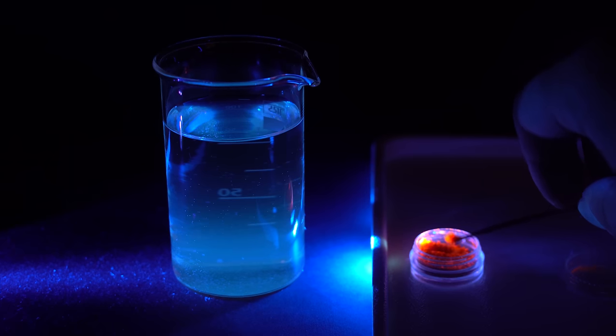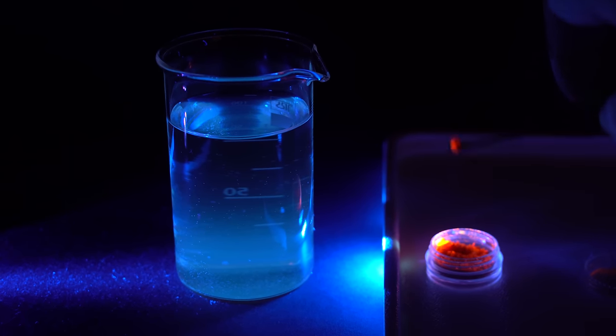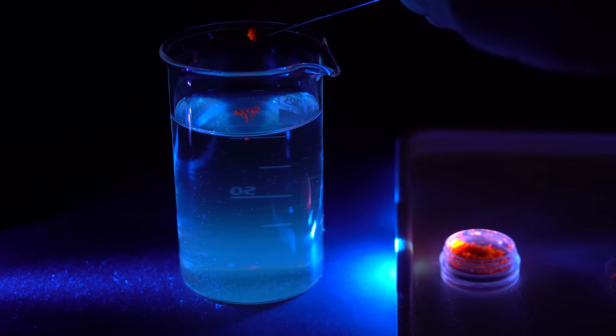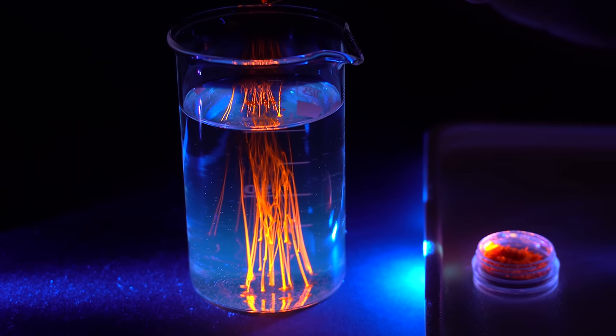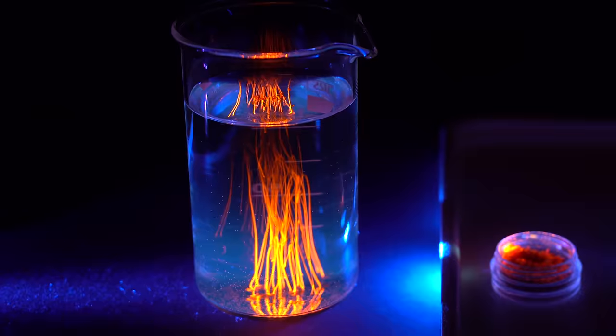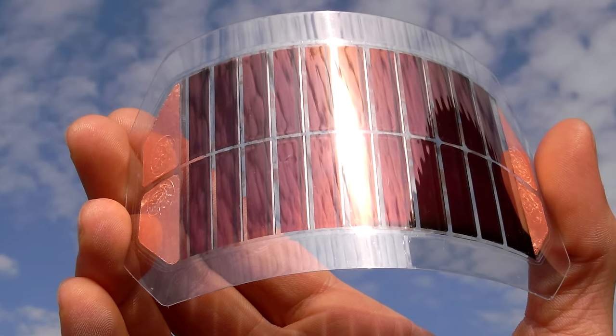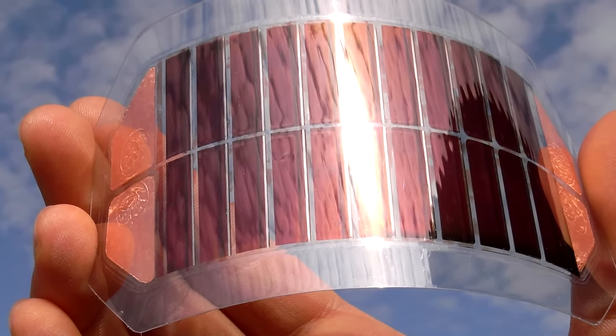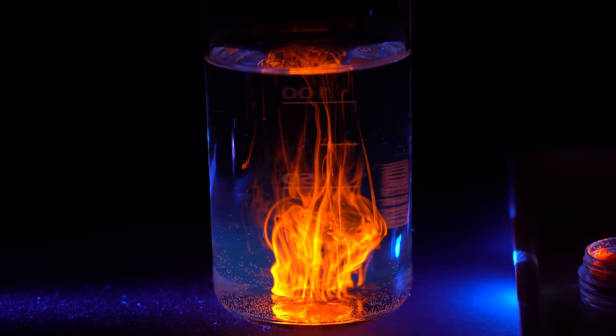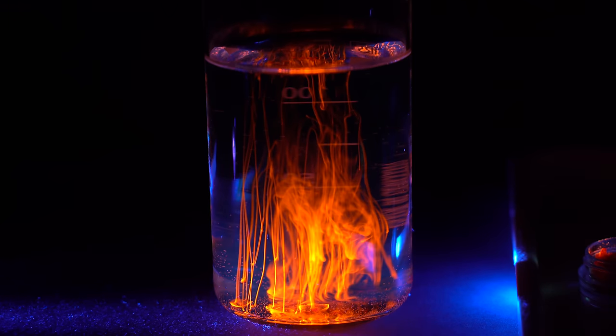Besides that, it can also catalyze chemical reactions when exposed to ultraviolet light. For instance, it's the case when water is oxidized to oxygen with oxidizing agents or when water is reduced to hydrogen with the presence of this ruthenium complex. Apart from that, this ruthenium compound can also be used to make more efficient thin film solar cells and also to make flexible LED displays.